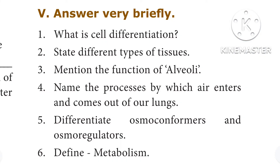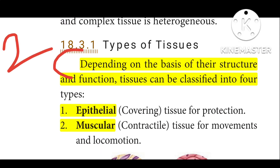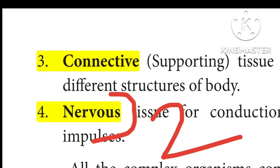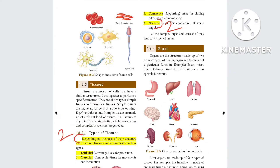Second question: State the different types of tissues. Refer to page number 207. Depending on the basis of their structure and functions, tissues can be classified into four types: epithelial tissue, muscular tissue, connective tissue, and nervous tissue.